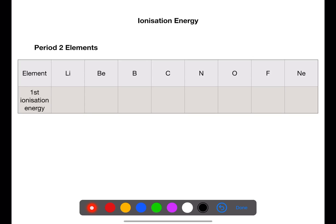Use your data book to find the ionization energy for the period two elements. We're focusing on first ionization energy. The first ionization energy for lithium is 520. For beryllium, it's 900. For boron, it's 801. For carbon, it's 1086. For nitrogen, it's 1402. For oxygen, it's 1314. For fluorine, it's 1681. And for neon, it's 2081.